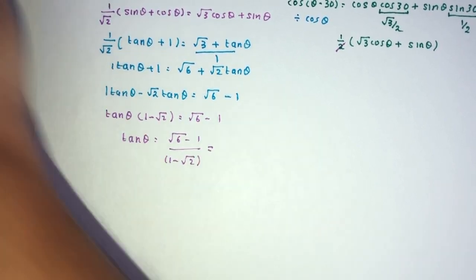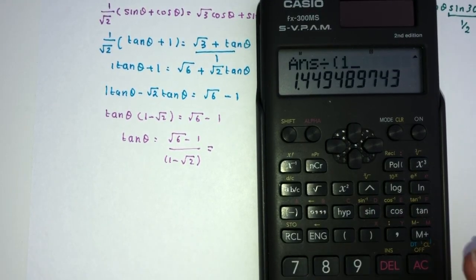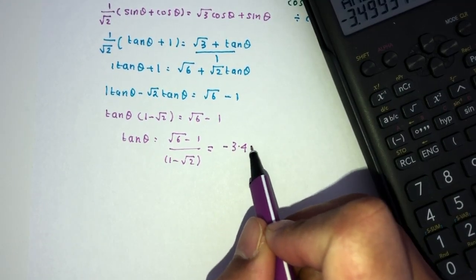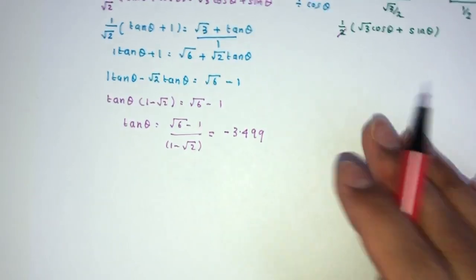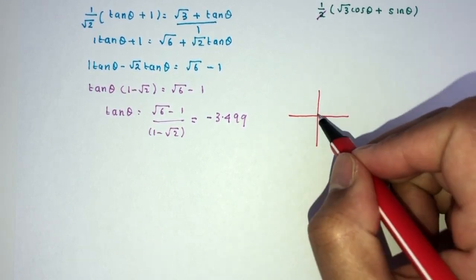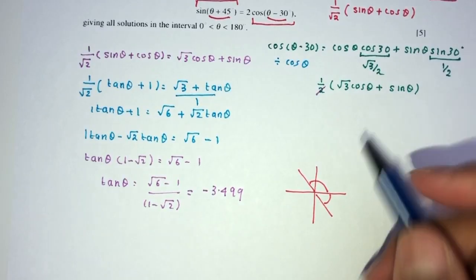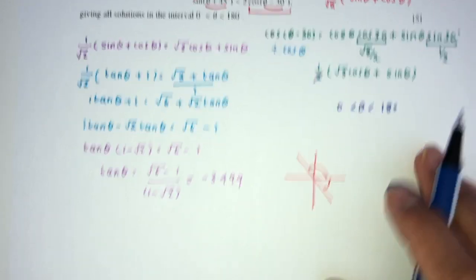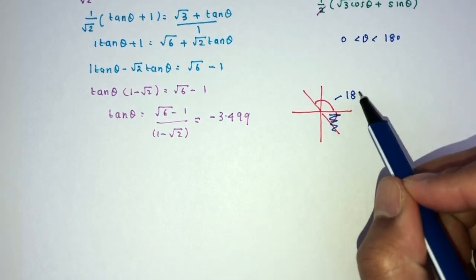Let's see what does that give us. √6 - 1 divided by 1 - √2, that should be -3.499. Now, as you guys should know, the value of tan is negative where? In which quadrant? By using the ASTC, it is negative here and here. Now, the question tells you we need to find theta between the value of 0 and 180. So obviously, we won't care about this one. We only care about this one. So this is 180 - α.